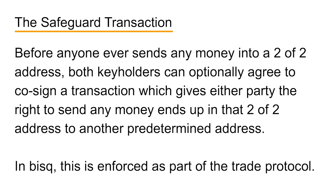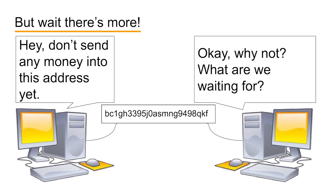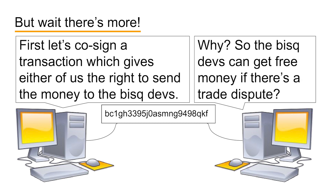BISC uses this ordinarily optional function as part of its trade protocol. Every computer that runs BISC software refuses to trade with anyone who doesn't agree to co-sign this safeguard transaction. And where does the safeguard transaction send the money if it's used? In the event of a dispute, it gives either party the right to send the whole value of the trade to a donation address controlled by one of the BISC developers.